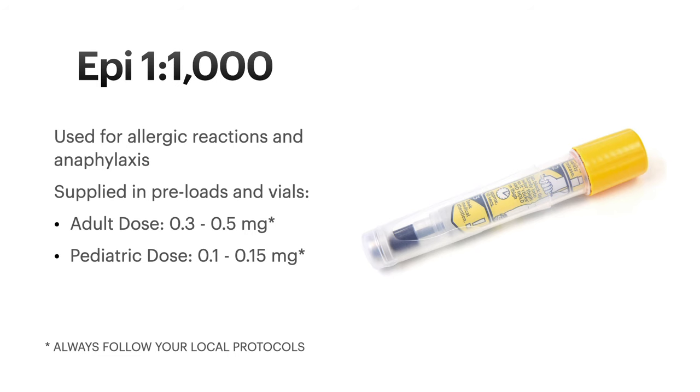A little bit more about the 1 to 1,000 concentration. It's generally used for allergic reactions and anaphylaxis. It's supplied in preloads and vials. The adult dose is between 0.3 to 0.5 milligrams, and that's usually IM. The pediatric dose is 0.1 to 0.15 milligrams, and those usually come supplied in the epi pens that we're used to seeing in the field. As a general reminder, always follow your local protocols.